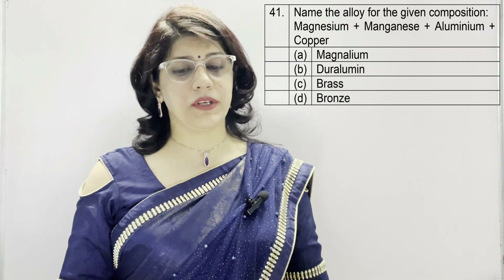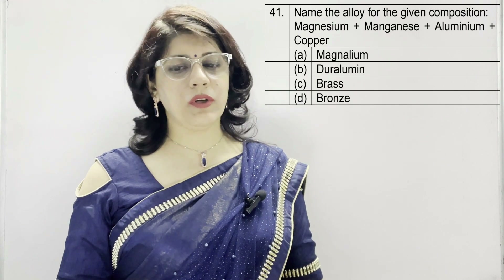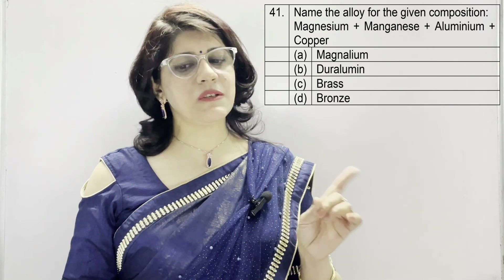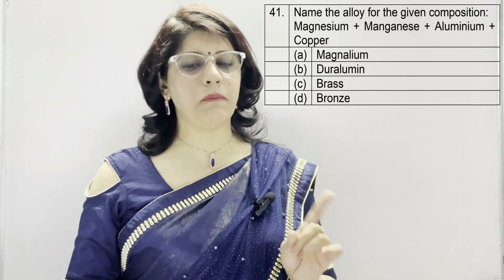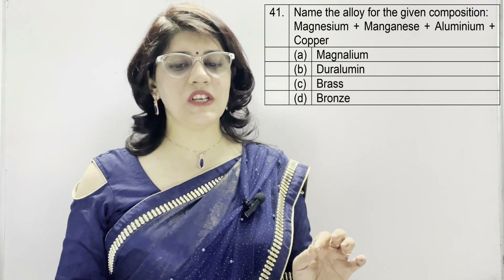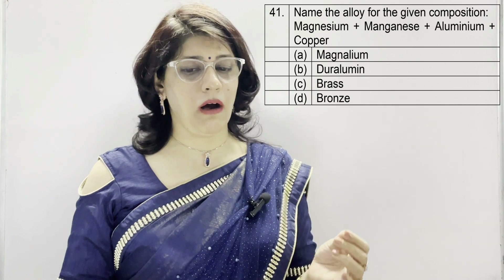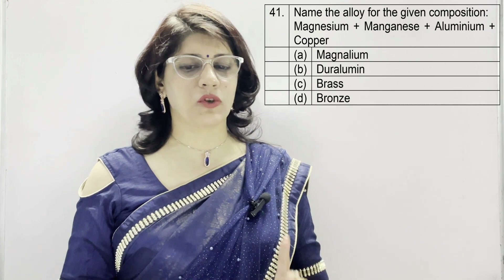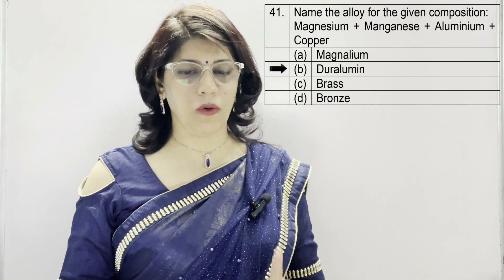In question number 41: name the alloy for the given composition — magnesium + manganese + aluminium + copper. A: magnesium, B: duralumin, C: brass, D: bronze. The correct option is B — duralumin.